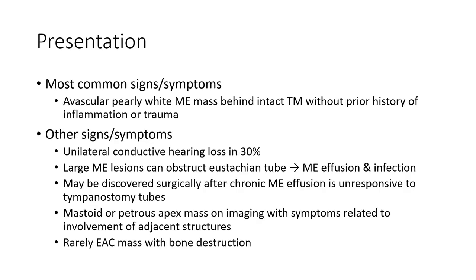Most common signs and symptoms are a pearly white middle ear mass behind an intact tympanic membrane without prior surgery, inflammation, or trauma. Other signs include unilateral conductive hearing loss in 30%. Large middle ear lesions can obstruct the Eustachian tube, leading to middle ear effusion and infection. Sometimes this is called after chronic middle ear lesions unresponsive to tympanostomy tube placement.